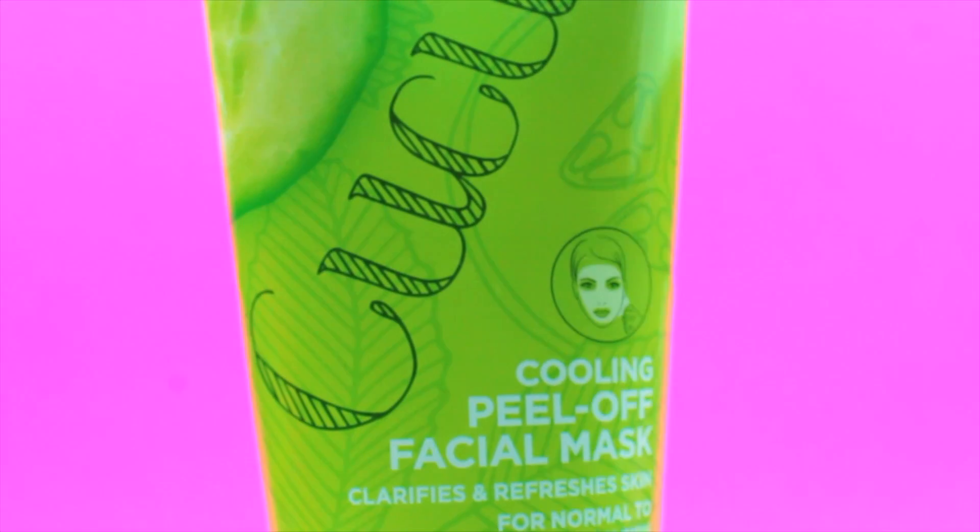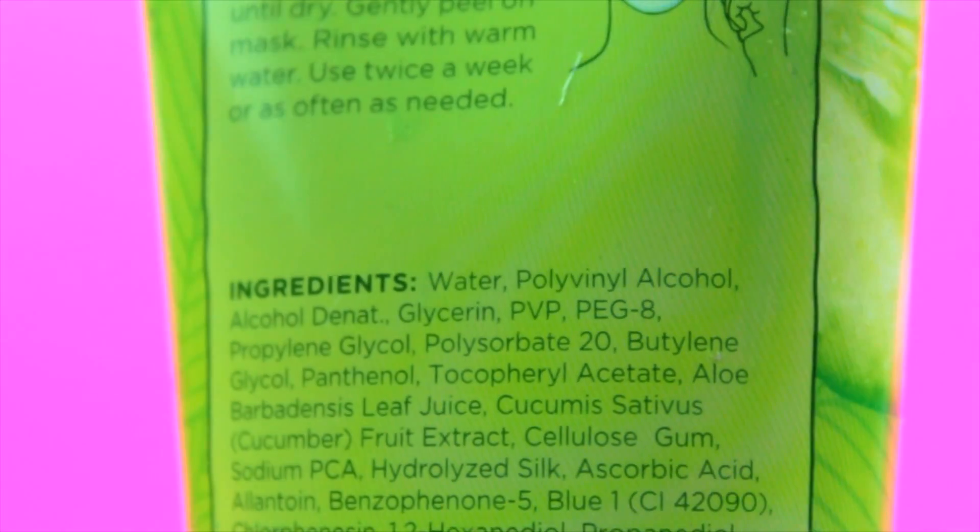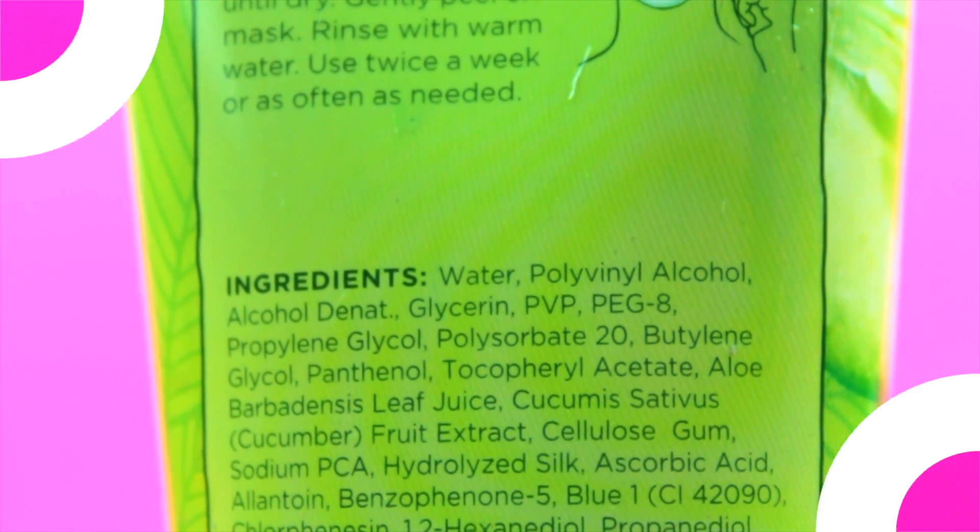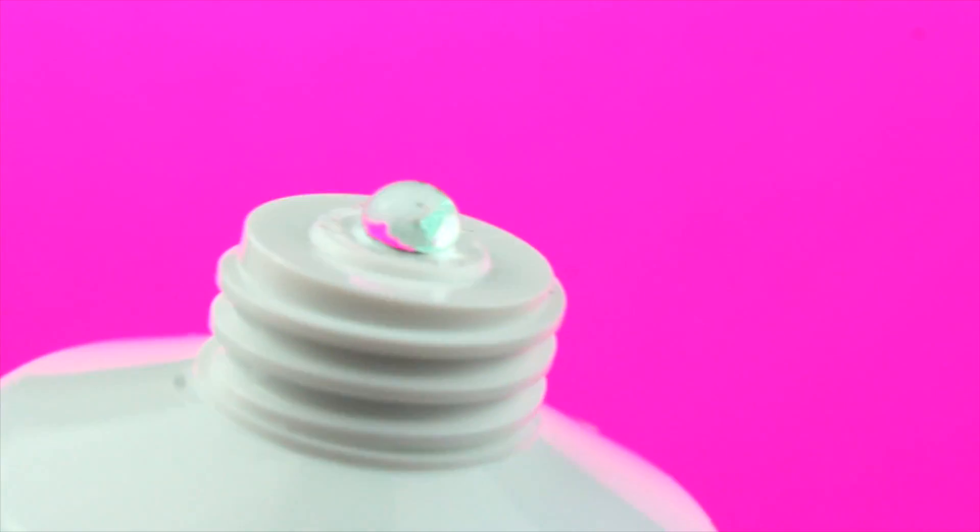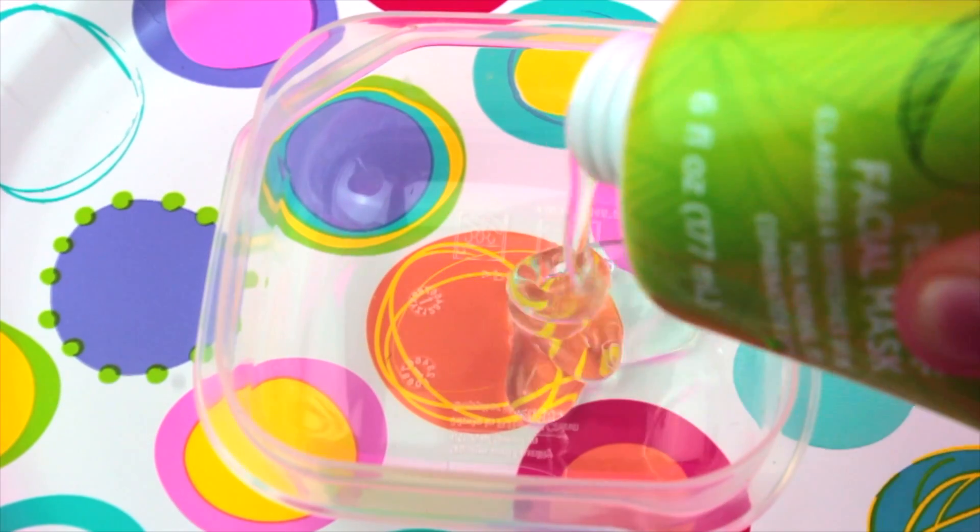This peel off face mask has to have polyvinyl alcohol, which is basically PVA, and it contains PVA like the ones that you find in normal glue. So just treat this like it's normal glue and just make it like normal slime.